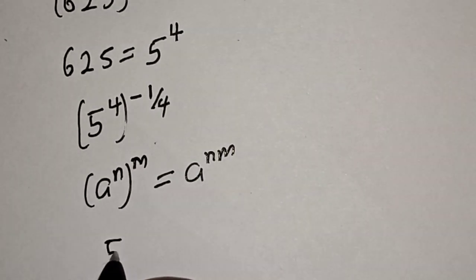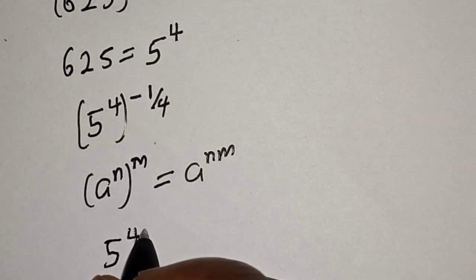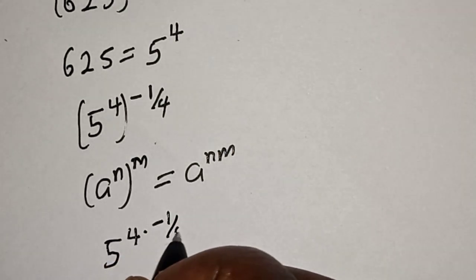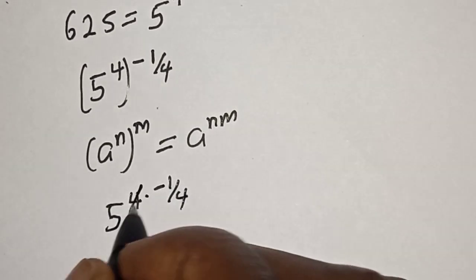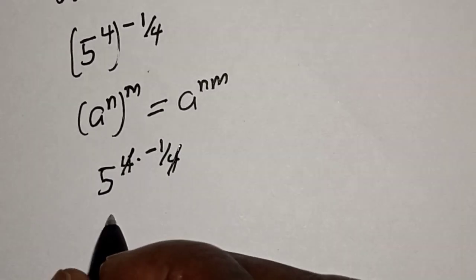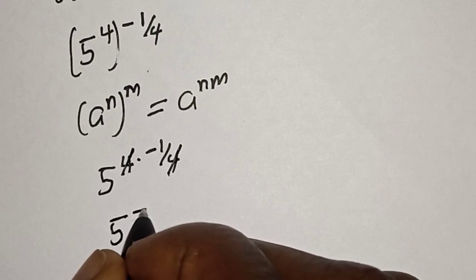Then, this is 5 to the power of 4 multiplied by minus 1 over 4. Therefore, we have 5 to the power of minus 1.